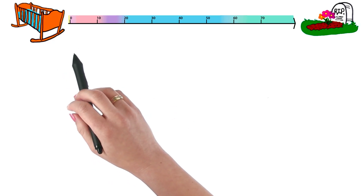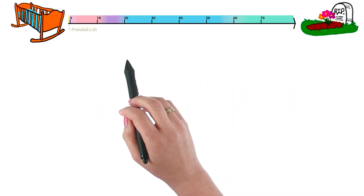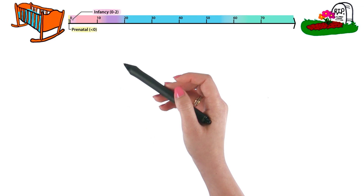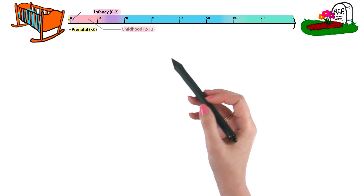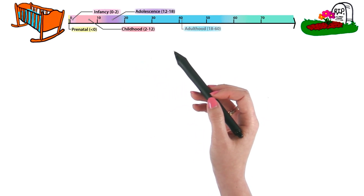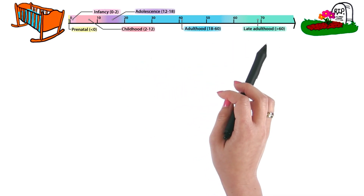Development can be divided into six main stages on the timeline: prenatal, infancy, childhood, adolescence, adulthood, and finally, late adulthood.